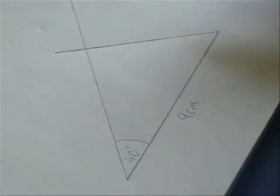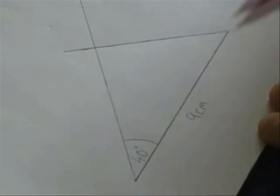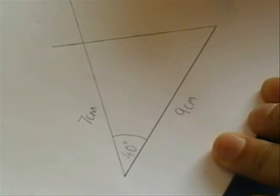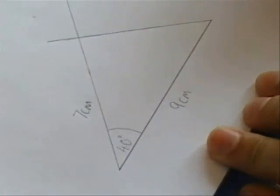And the typical exam question may be that yes you've done that and you've labelled this as seven centimeters. You may be asked to find the length or you may be asked to find the two angles.